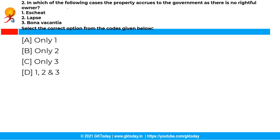The next question is: in which of the following cases does property accrue to the government as there is no rightful owner? The options are: estate, lapse, and bona vacantia. You have to select the correct options from those given below.